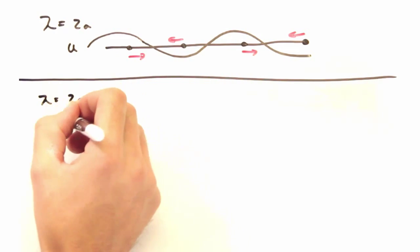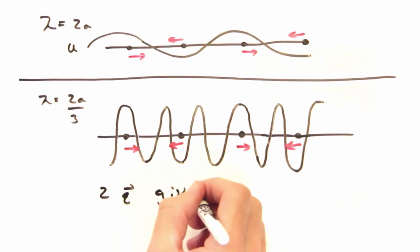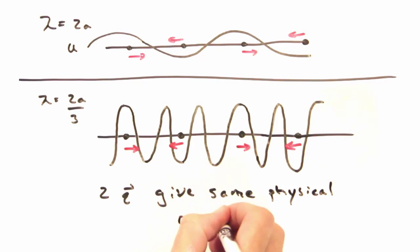Now let's look at the same lattice with a wavelength 2a over 3. The atoms still sit at peaks and troughs, so they experience the same out of phase motion that they did with the other wave. Okay, so that's how two different wave vectors can give the same physical result.